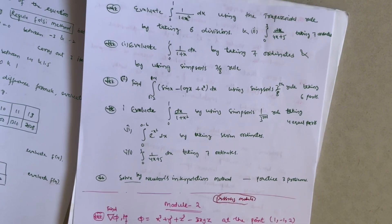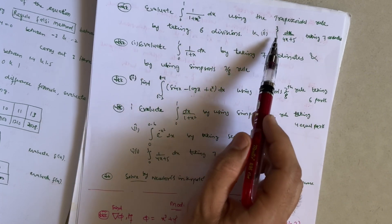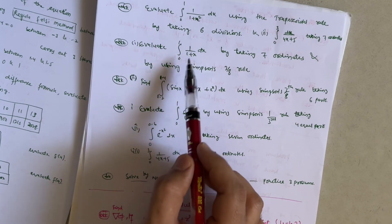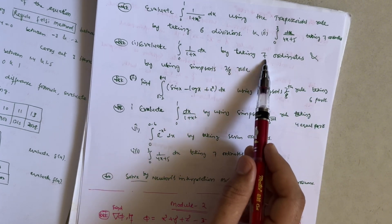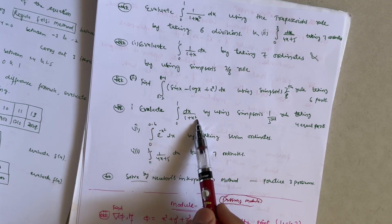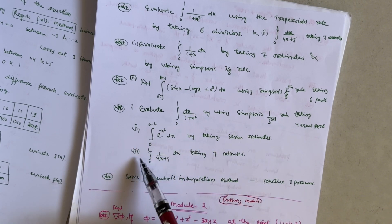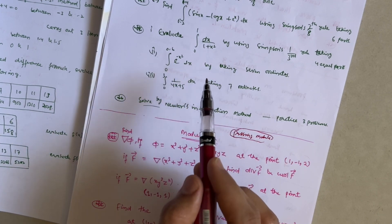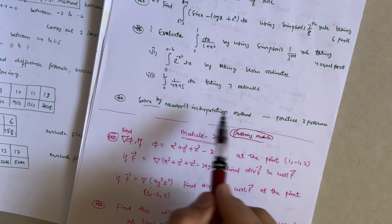Important numerical integration questions: evaluate ∫₀¹ 1/(1+x²) dx using the Trapezoidal rule with 6 divisions; and ∫₀³ dx/(4x+5) taking seven ordinates. For Simpson's 3/8 rule: evaluate ∫ 1/(1+x) dx and ∫(sin x − log x + eˣ) dx taking 6 parts and 7 ordinates respectively. For Simpson's 1/3 rule: ∫ dx/(1+x²) with four equal parts and ∫₀^0.6 e^(−x²) dx with seven ordinates. Also ∫ 1/(4x+5) dx with seven ordinates. If convenient, go through Newton's Interpolation method problems from previous question papers.